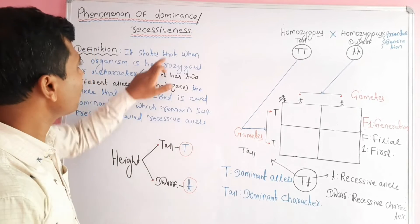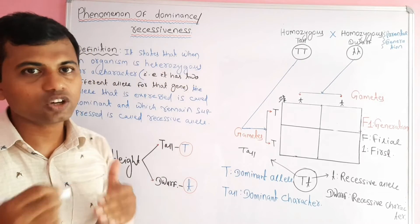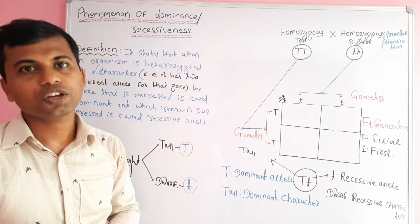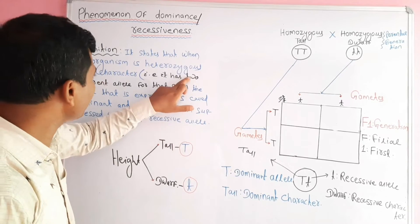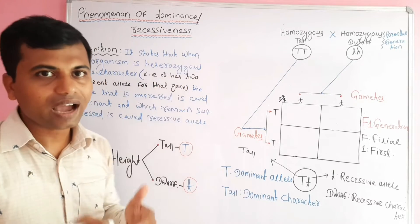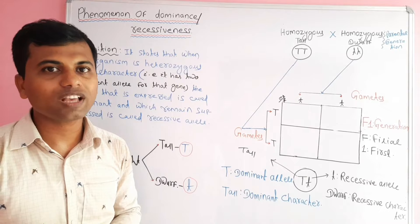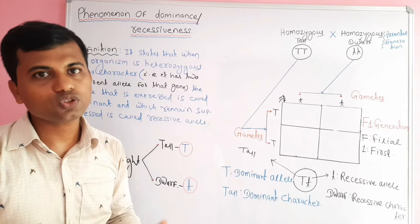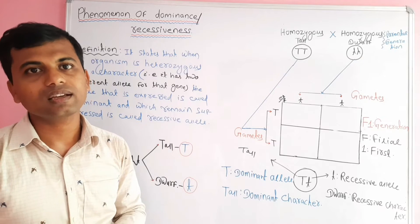The phenomenon of dominance and recessiveness states that when an organism is heterozygous for a particular character — meaning it has two different alleles for a gene — the allele which is expressed is known as the dominant allele, and the allele which is not expressed is known as the recessive allele.